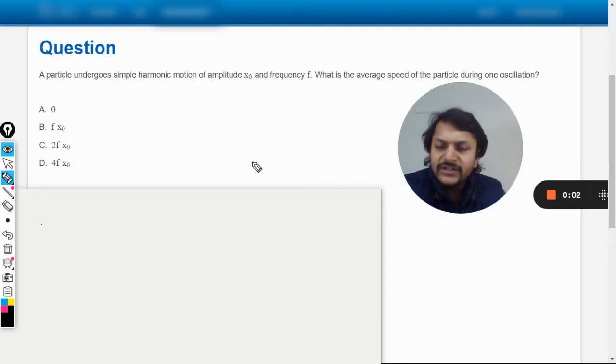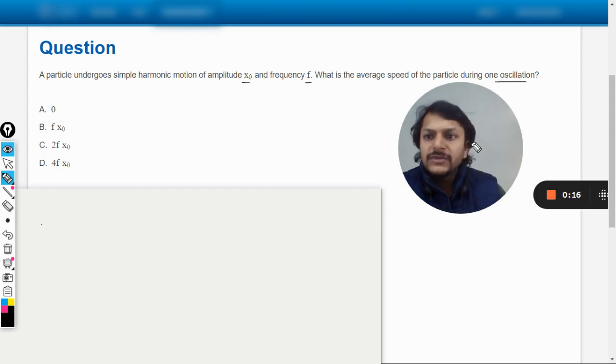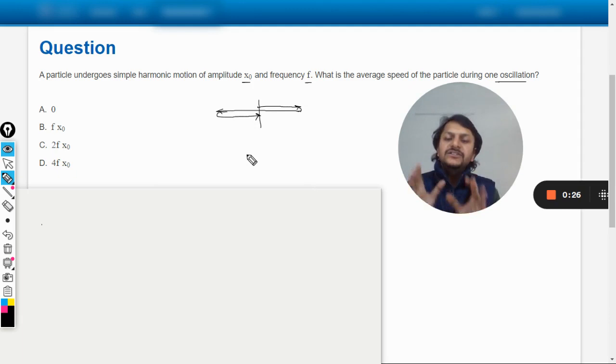Okay dear students, let us see what is in this question. A particle undergoes simple harmonic motion with amplitude x_0 and frequency f. What is the average speed of the particle during one oscillation? So the particle is undergoing simple harmonic motion - it moves from mean to extreme, then from extreme to the other extreme, and then comes back again to the mean position. This is what is happening in the complete picture.